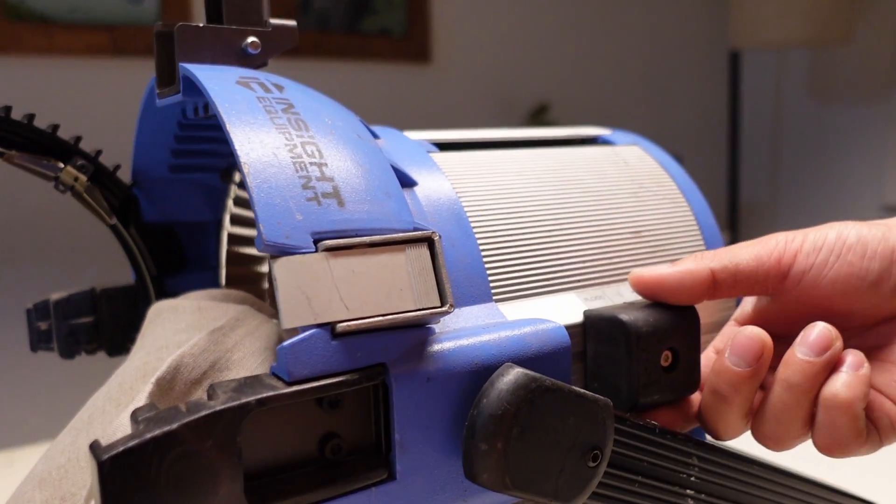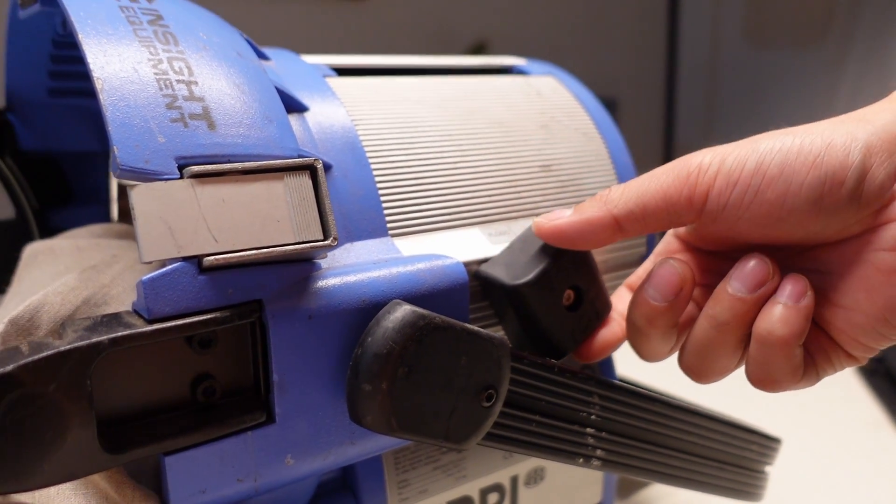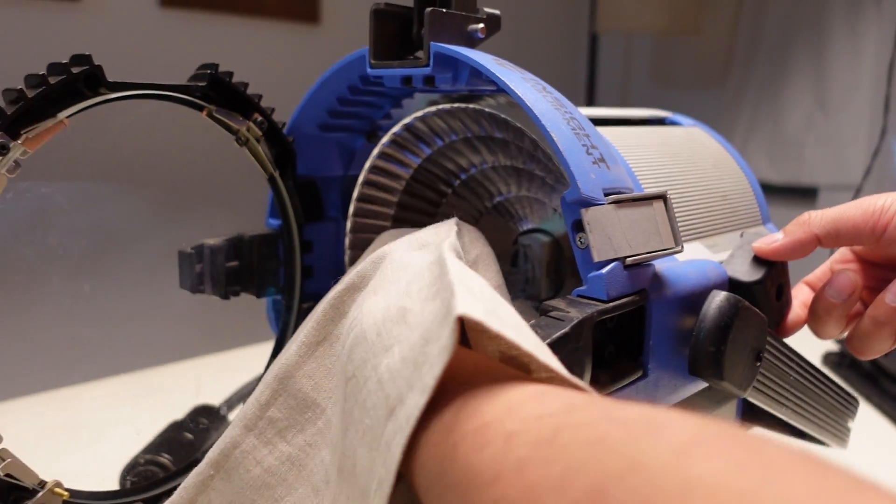So you want to hold the bulb first so it doesn't fall out when you loosen it. And all of the single-sided HMI bulbs from Arri are going to have the lock on the side of the lamp.